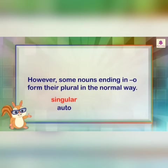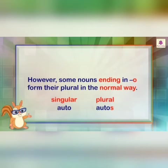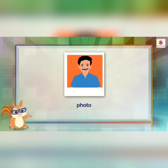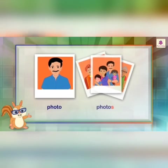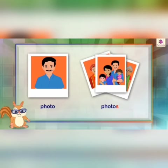However, some nouns ending in O form their plural in a normal way — just by adding S, not ES. Similar to the F rule where we don't always use VES, with some O-ending nouns we don't add ES either. For example, photo becomes photos. So for F and O cases, keep these exceptions in mind.